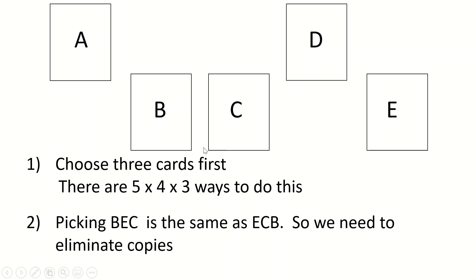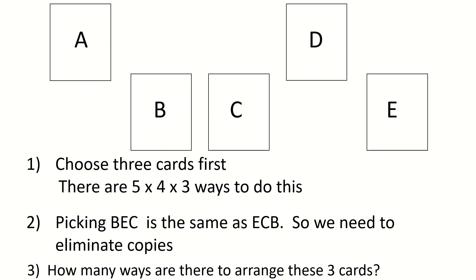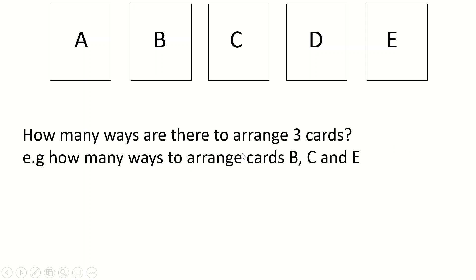We need to eliminate all of these extra double counts. What we need to do is think about how many ways there are to arrange the three cards that we've picked out. Once you've chosen whichever three they're going to be, how many ways are there to arrange, say, B, C, and E? We can list them out: B-E-C, B-C-E, C-B-E, C-E-B, E-C-B, E-B-C. Clearly there are six ways to arrange these cards.